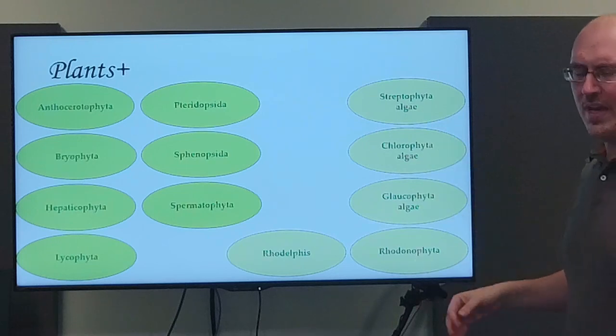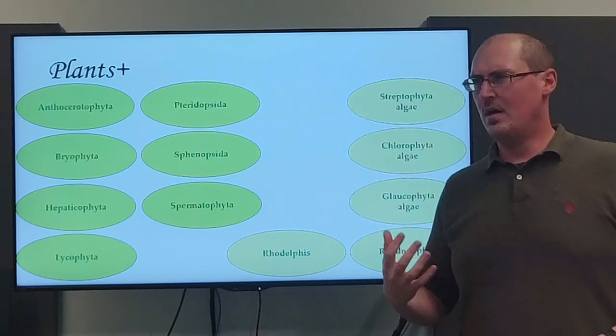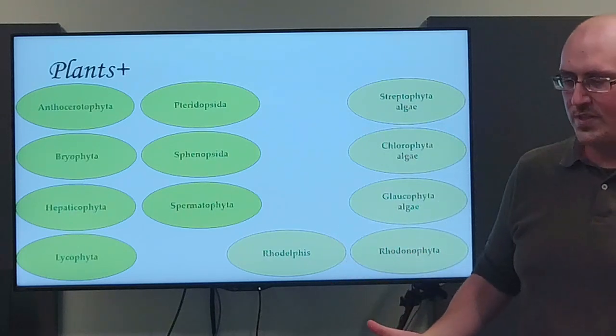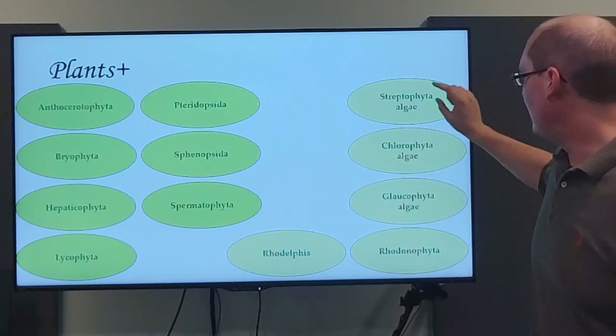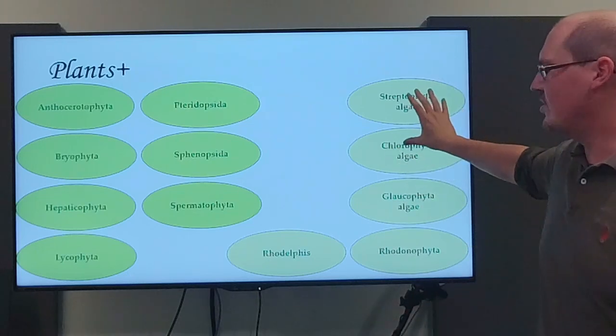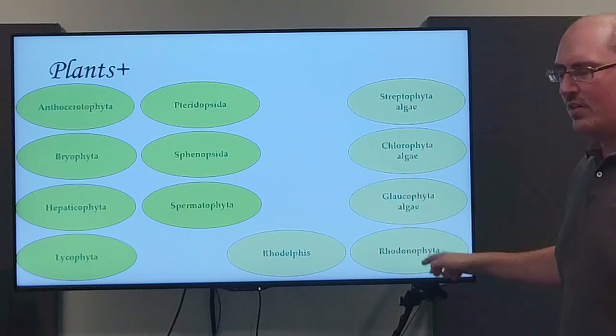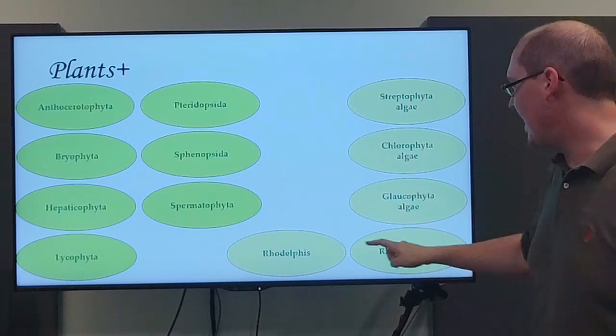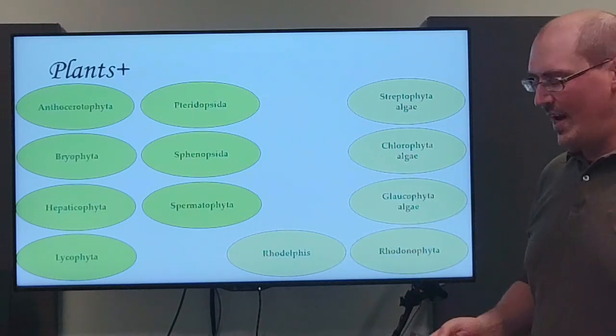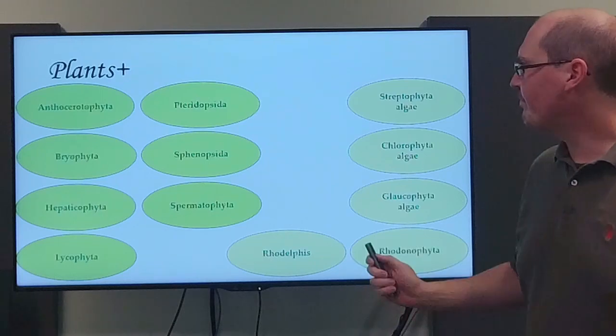And then there's five phyla of algae. Algae being the shorthand term for anything that photosynthesizes. So Streptophyta and Chlorophyta, these are green algae. Glaucophyta is a single-celled algae. And then Rhodophyta and Rhodelphidia, these are red algae and the sister group.